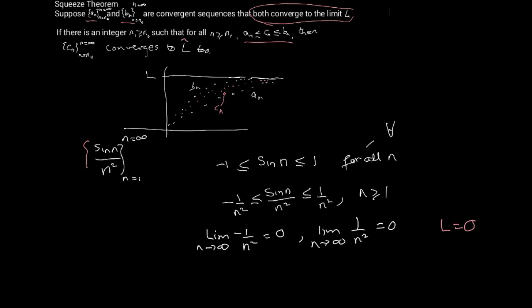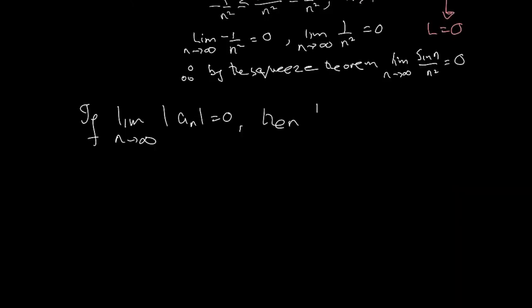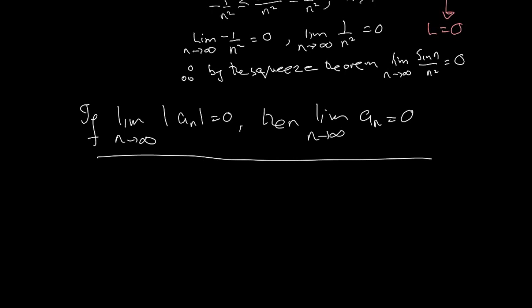So L is zero in this case. This is the L we're talking about. Since this limit is zero and both of them are the same, sin(n) over n², being squeezed between one over n² and minus one over n², must also converge to zero. Therefore, by the squeeze theorem, the limit as n goes to infinity of a_n is also equal to zero.